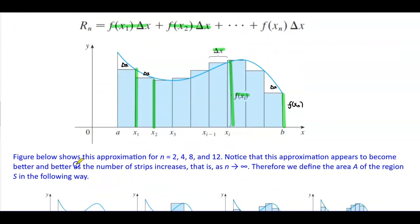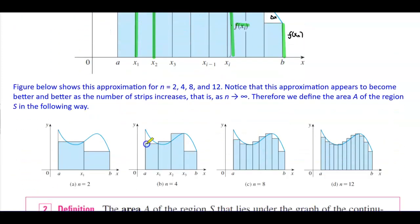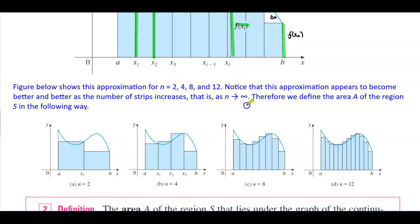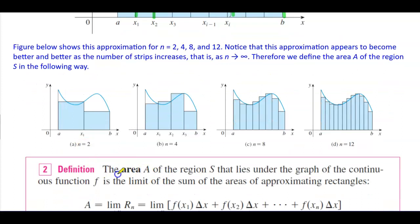The figure below shows this approximation for n equal to 2, 4, 8, and 12 rectangles. Notice that the approximation appears to become better and better as the number of strips increases — that is, as n approaches infinity. Therefore, we define the area of the region S in the following way.